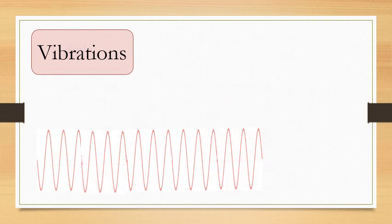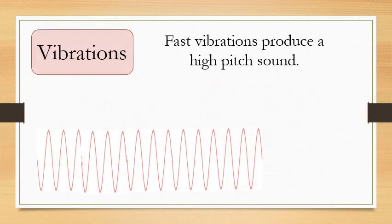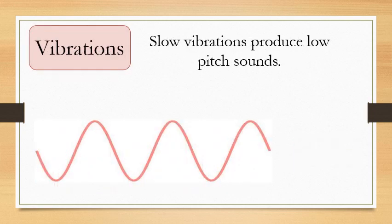Sound is produced through vibrations. Fast vibrations have a very high-pitched sound and the sound waves look a little bit like this. Slow vibrations produce a low-pitched sound and the sound waves look a little bit like this.